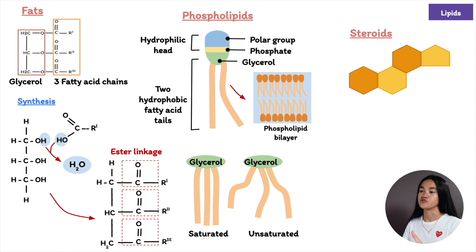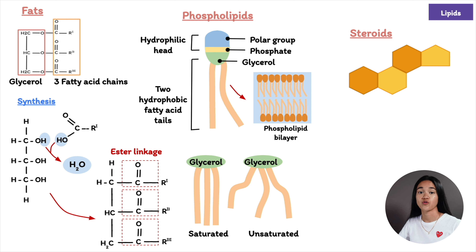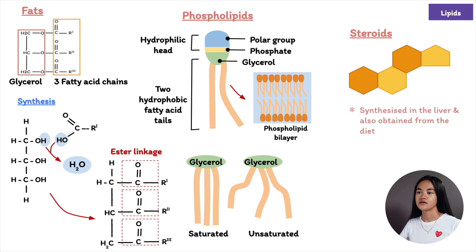Another type of lipid is steroids. The carbon skeleton of steroids consists of four fused rings and they vary in the chemical groups attached to those rings. A type of steroid is cholesterol — it's an important component of cell membranes in animals and is the molecule from which sex hormones are synthesized. Cholesterol is synthesized in the liver and also obtained from the diet.